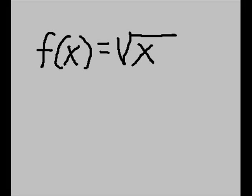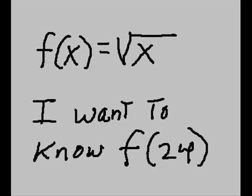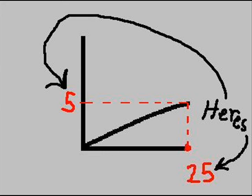I have a function f(x) equals radical x, that's x raised to the one-half power. I want to know f of 24, but it's too difficult. But I can easily do f of 25. f of 25 equals 5.